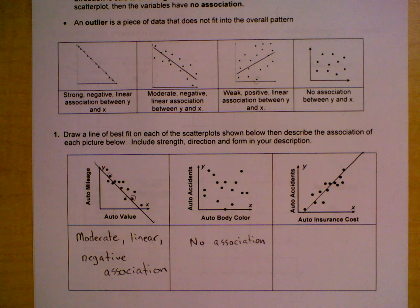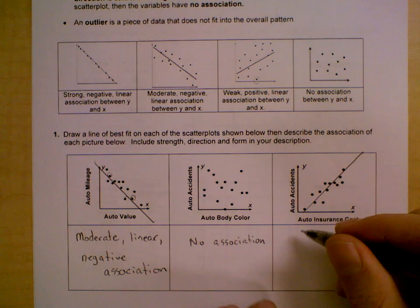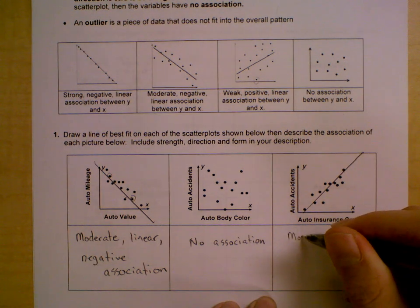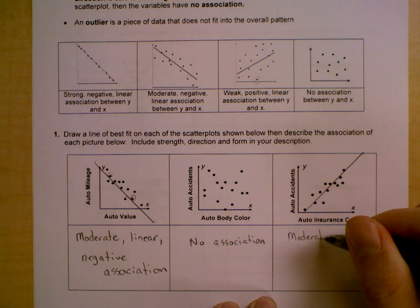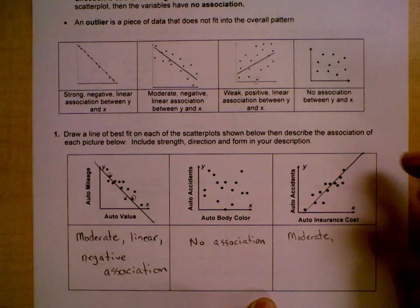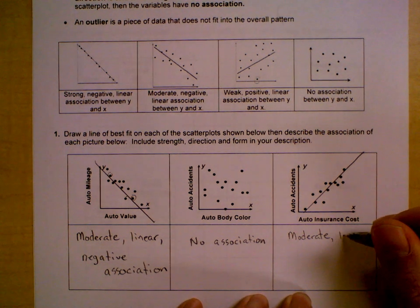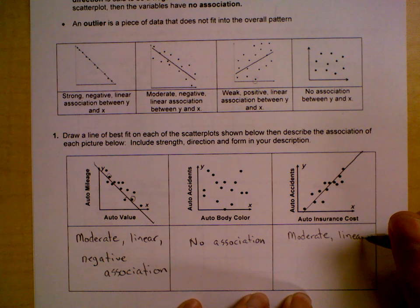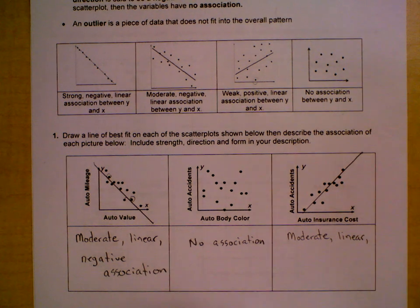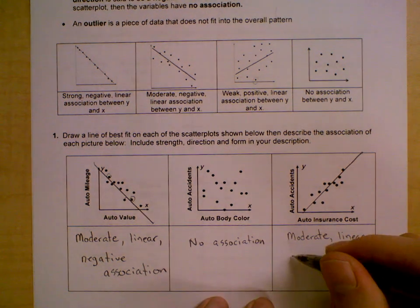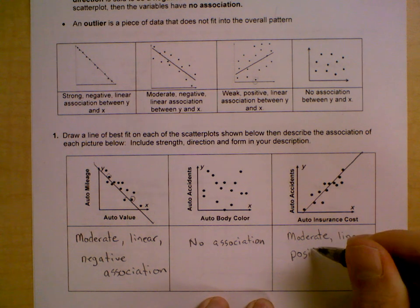I'm going to say this is moderate, although if you said strong, I don't think you're far off. If you did say it was weak, I would say that's probably not correct. So moderate, it does form the pattern of a line, so it's linear. And then this one's going to be a positive association because it has a positive slope.